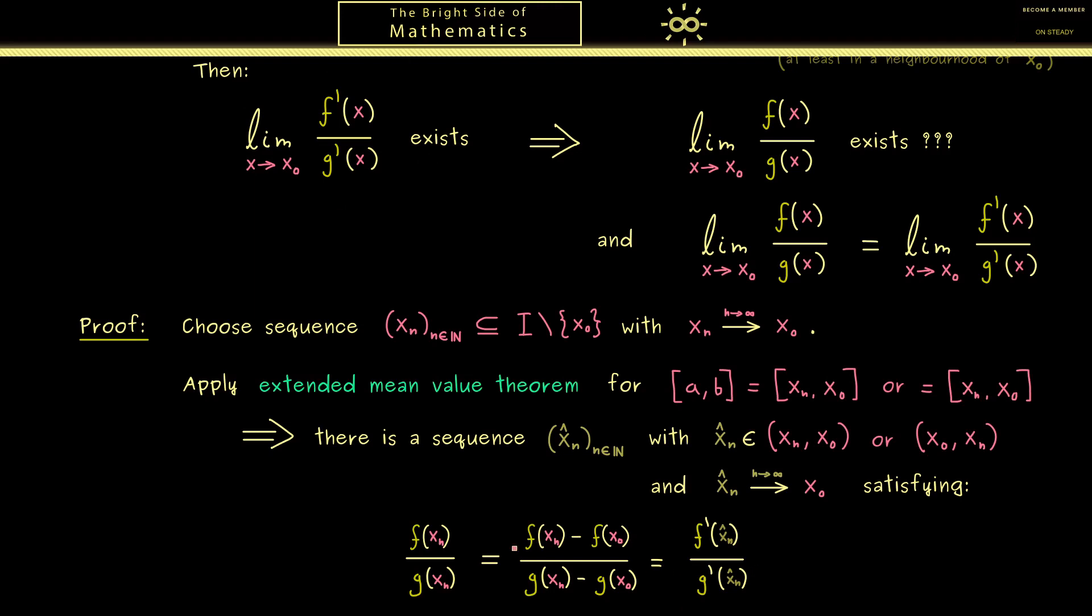And there you see this is the whole proof of the theorem of L'Hôpital. If we know that this limit exists, then we can conclude that also this limit exists. Hence there are no question marks left here. The existence of this limit is guaranteed by the existence of this one. And then of course we are allowed to apply this nice formula here.